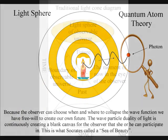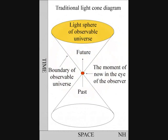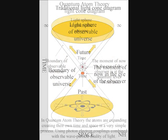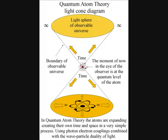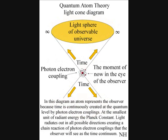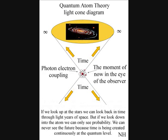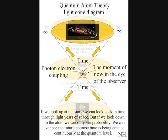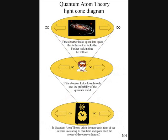In this traditional light cone diagram, there is no understanding of time. But in these diagrams, the atom is creating its own time and space in a chain reaction of photon-electron couplings that is called stimulated emissions. Therefore, if the observer looks up, he can see back in time through light years of space. But if he looks down into the quantum world of the atom, he can only see probability.